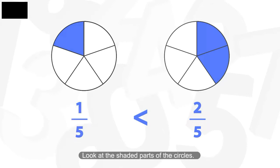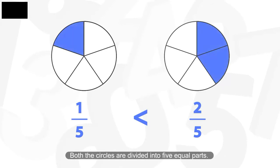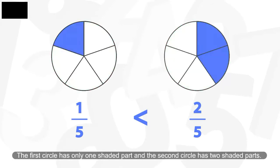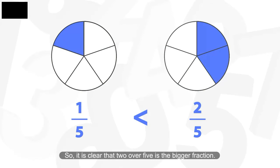Look at the shaded parts of the circles. Both the circles are divided into 5 equal parts. The first circle has only one shaded part and the second circle has 2 shaded parts. So it is clear that 2 over 5 is the bigger fraction.